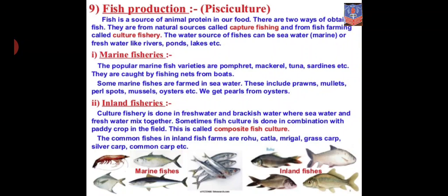The water sources for fishes can be sea water, that is marine, or fresh water like rivers, ponds and lakes. Popular marine fish varieties include pomfret, mackerel, tuna and sardines, which are caught using fishing nets from boats. Some marine fishers are also farmed in sea water, including prawns, mullets, pearls, spots, mussels and oysters. Oysters are marine organisms that are reared for pearls.